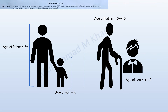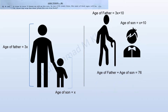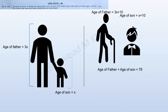In 10 years time, in mathematical expression we can write: age of the father plus age of son equals 76. We know that age of the father is 3x plus 10 and age of the son is x plus 10. So putting these values in the equation: 3x + 10 + x + 10 = 76. Now we can solve this equation for x.